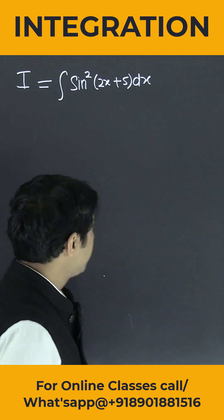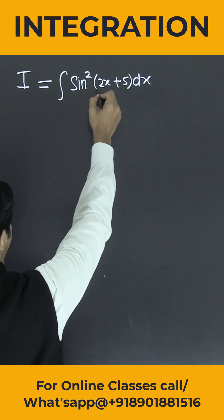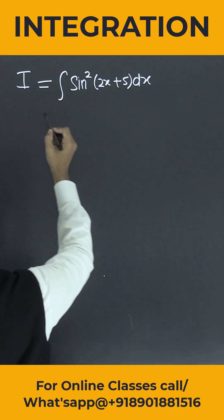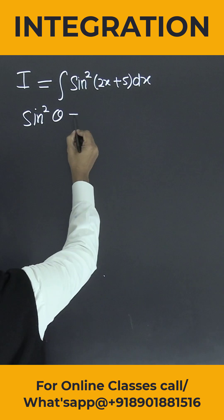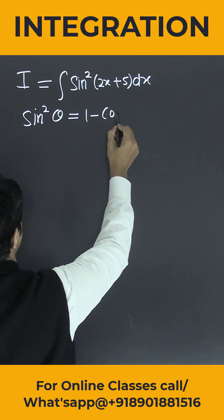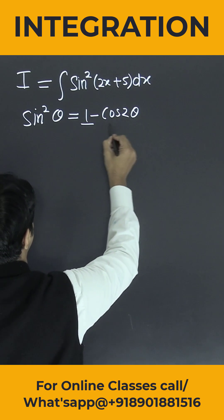One integral is given to us: integration sine squared 2x plus 5 into dx. Now we know one formula that sine squared theta is equal to 1 minus cos 2 theta by 2.